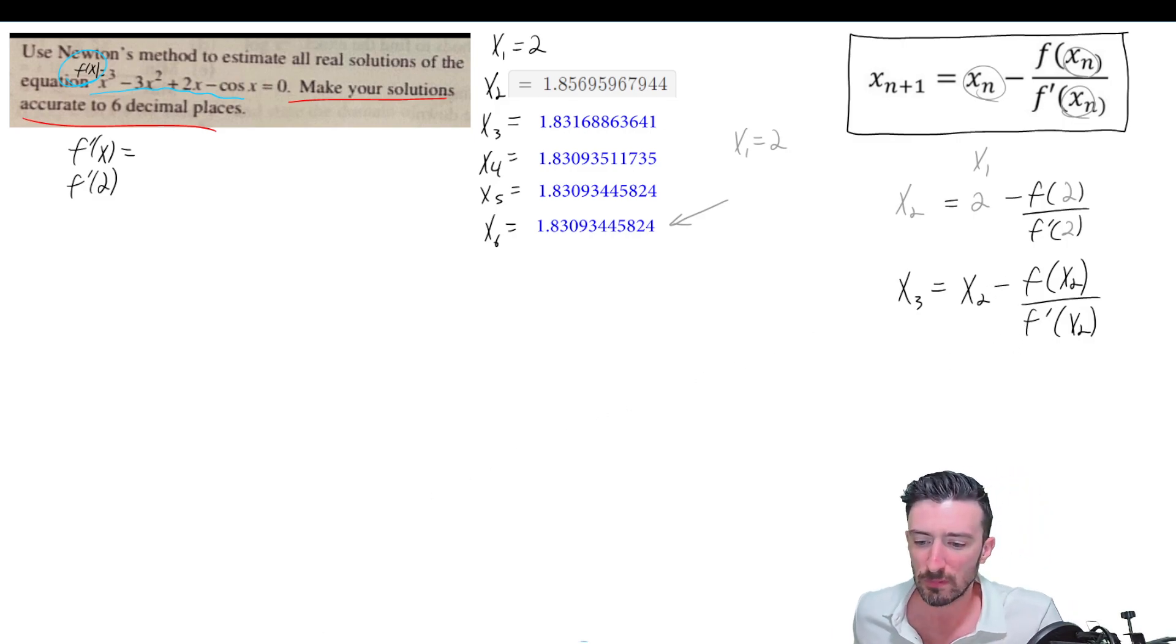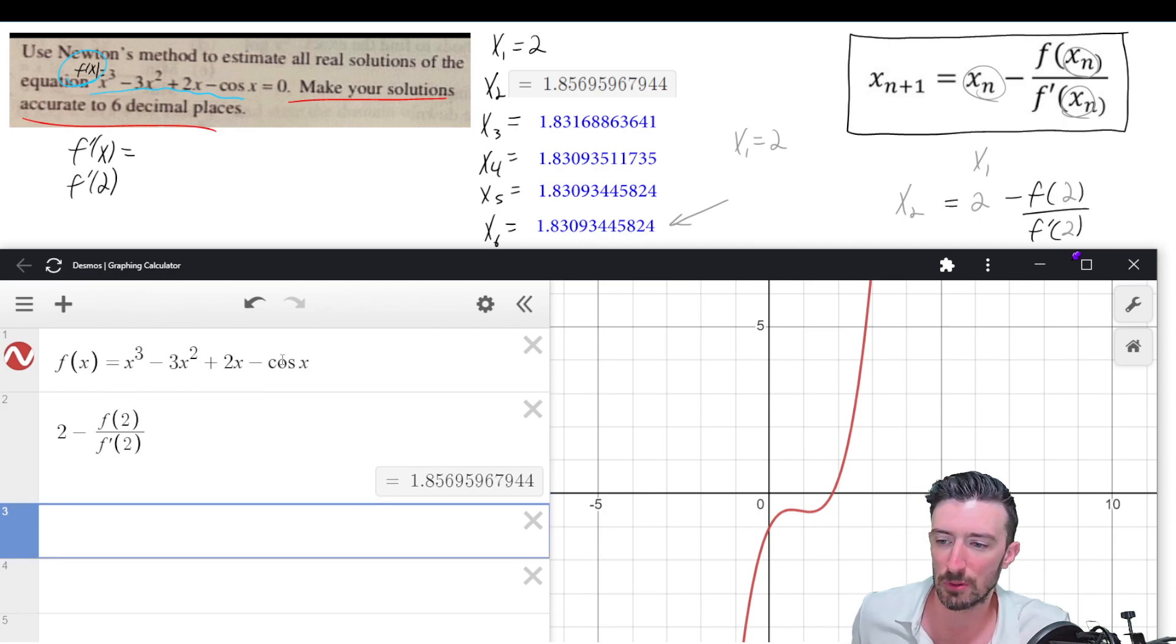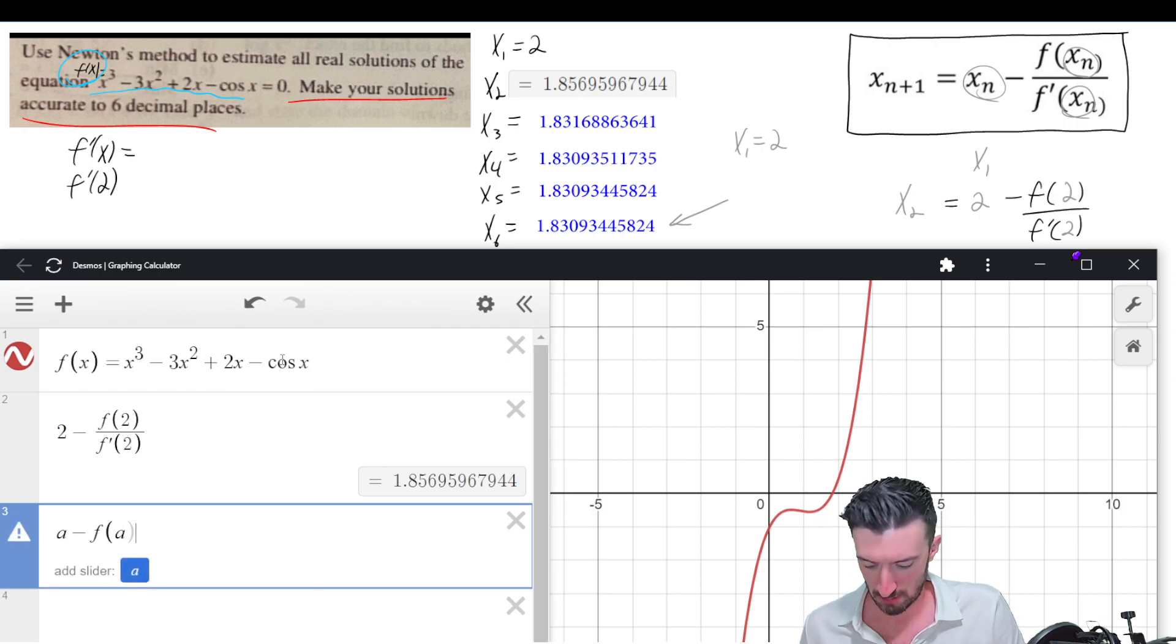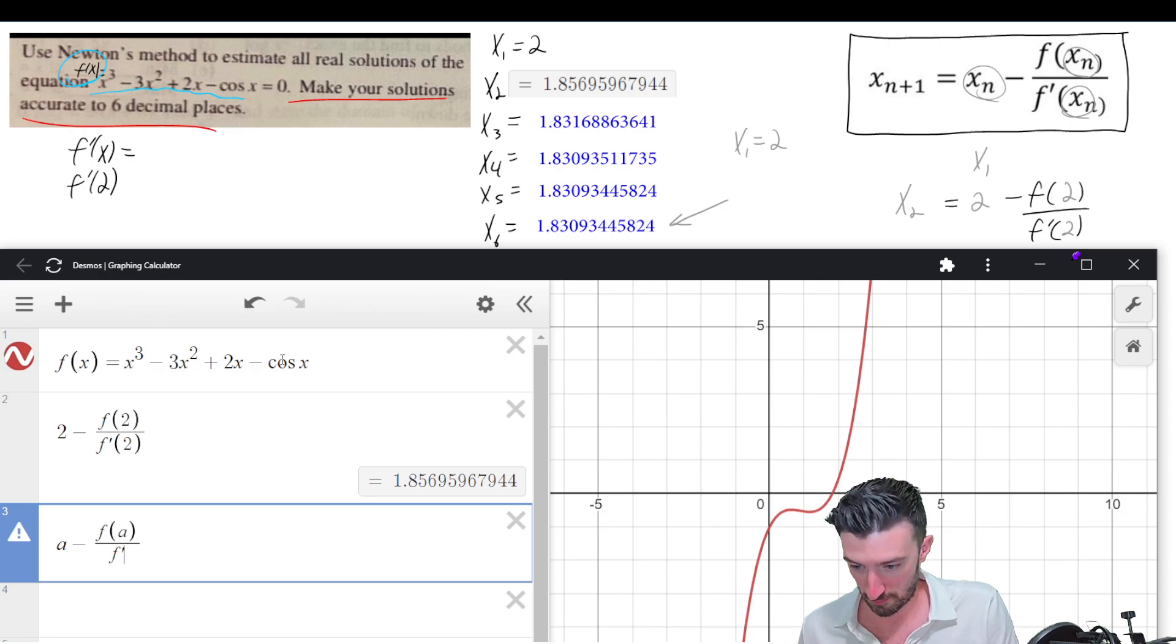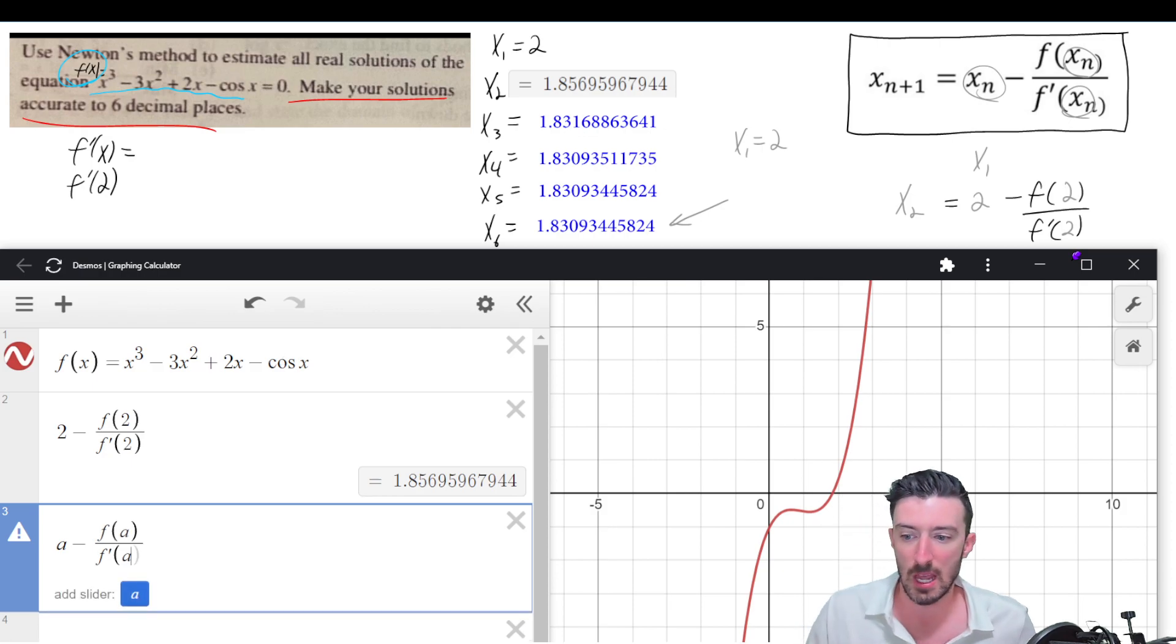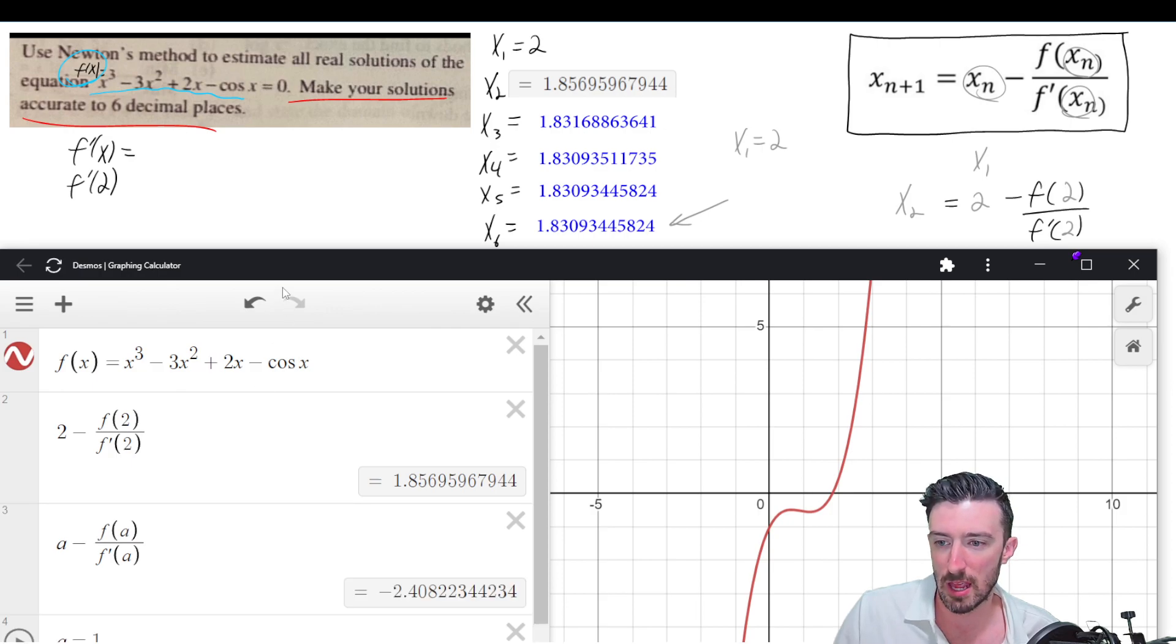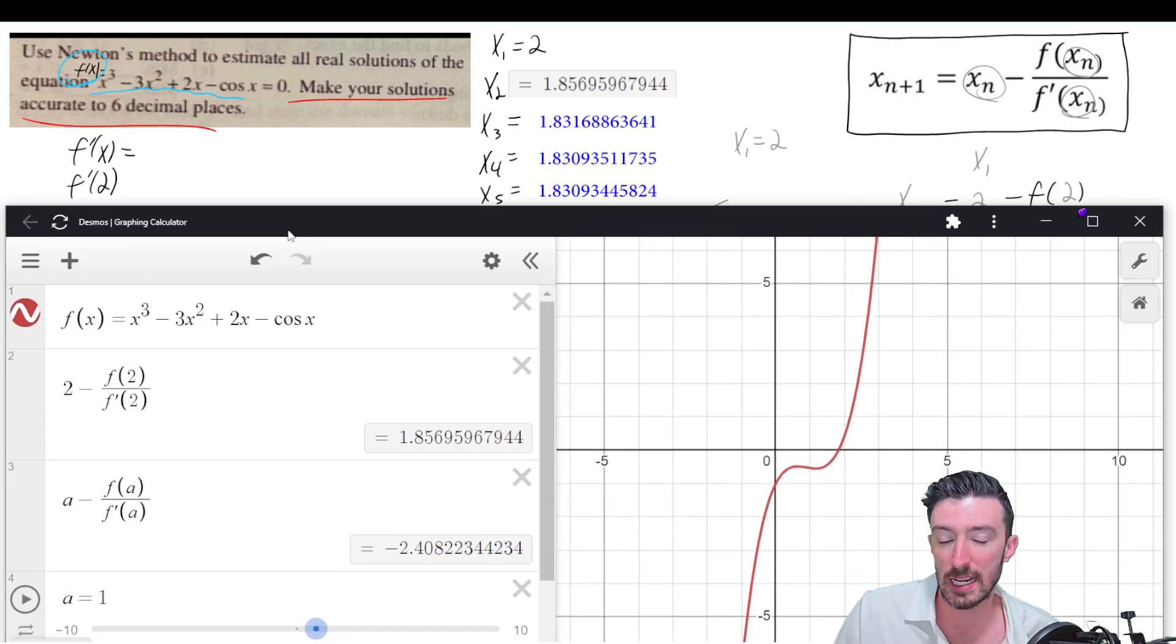What I'm going to do is I'm going to tell Desmos, everything's going to be in a certain form. It's always going to be a minus f(a) over f'(a). And now I have to hit add a slider. And now it gives me the option to let a be whatever. So it's now set up in the right form for me to just keep plugging in my guesses. And that's how Newton's method works. You keep plugging your guesses.